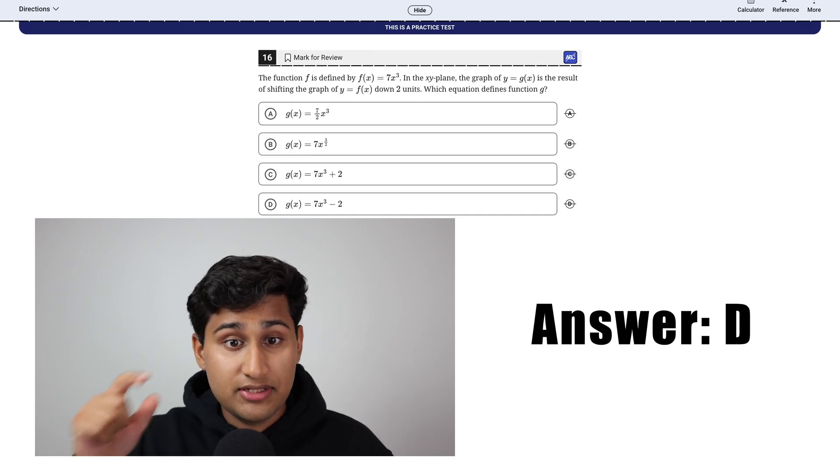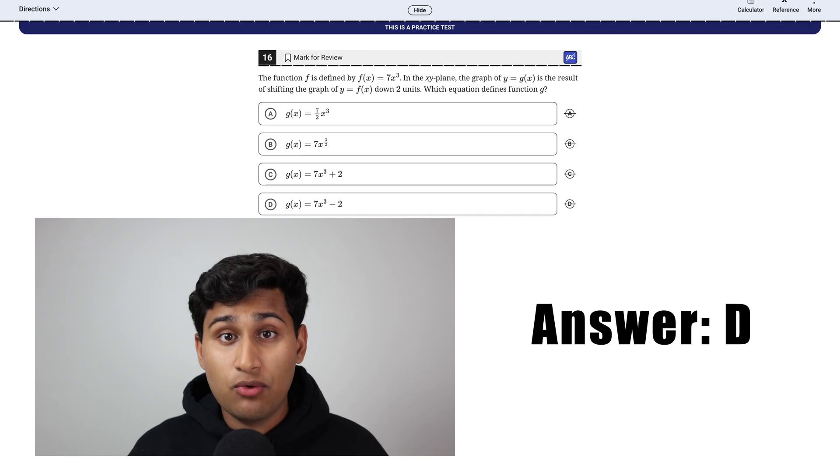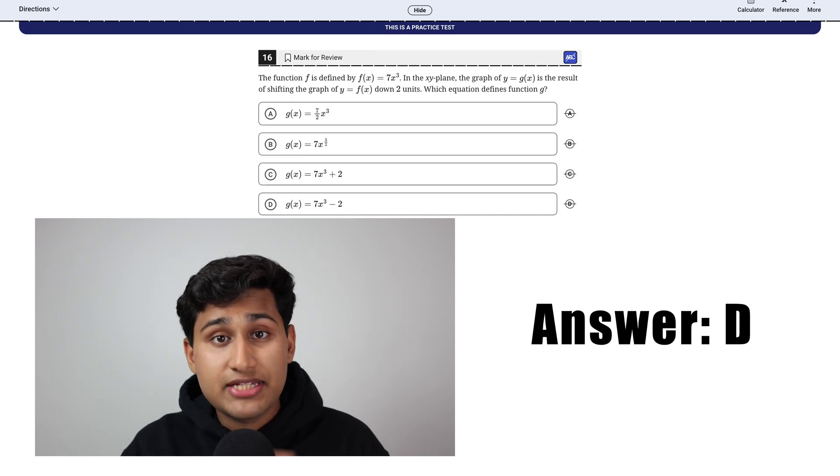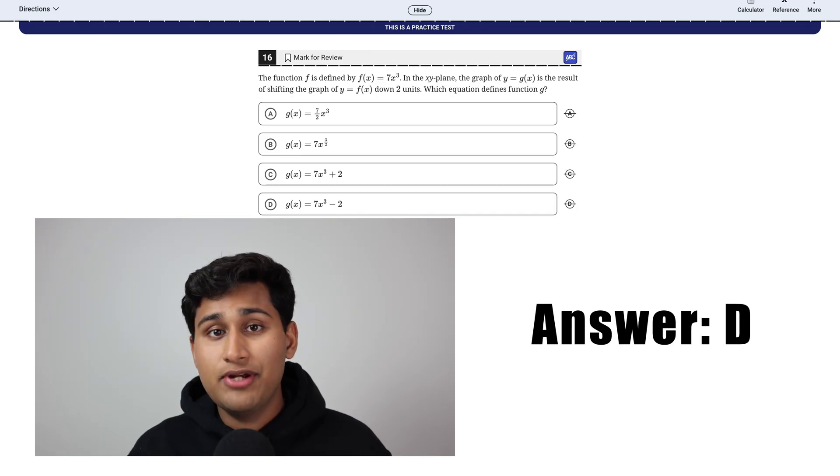So that means it's going down. If it was seven in parentheses, X minus two, close parentheses to the third power, then it would be shifting horizontally. But since it's outside that exponent and variable, that's how you know it's shifting down and minus is always down.